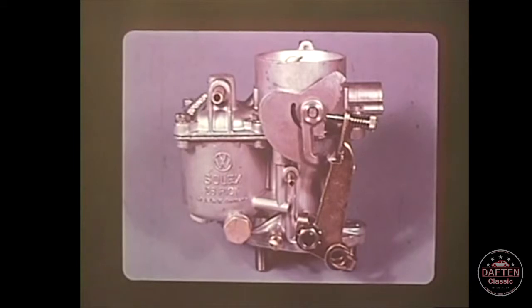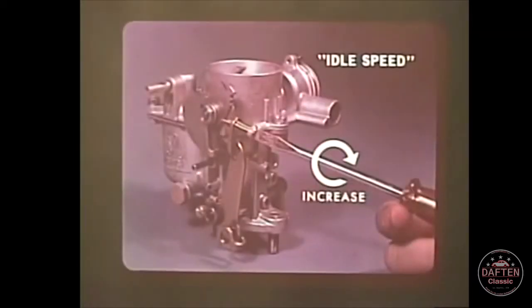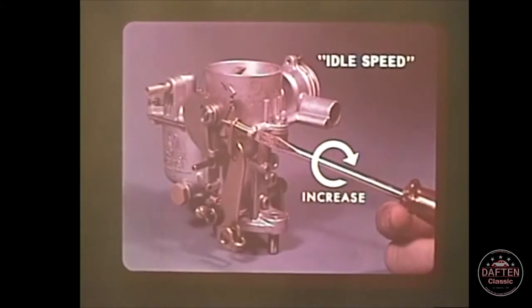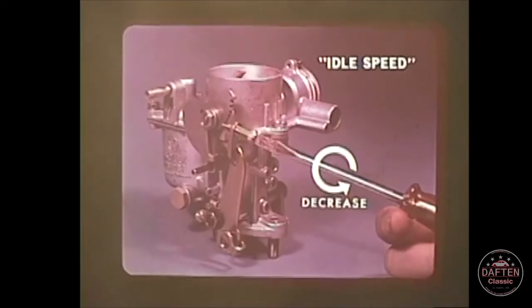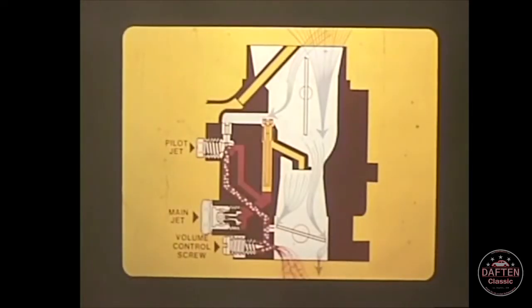Let's talk first about idle speed. Turning the idle speed adjusting screw to the right opens the throttle valve and increases the engine speed. Turning it to the left closes the throttle valve, reducing the speed. But what's actually happening to the system as you adjust the idle speed? Let's take a look inside.